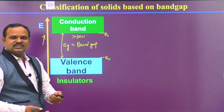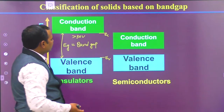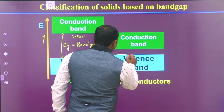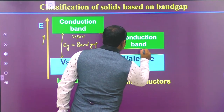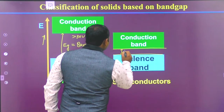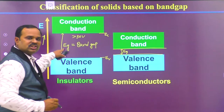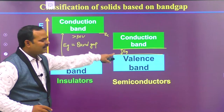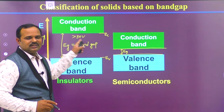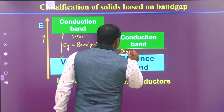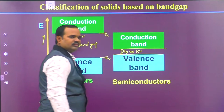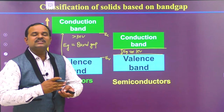For some materials, the band gap looks different — you can see here, this is the valence band top and this is the conduction band minimum. The band gap is very small compared to the insulators; there exists some band gap, but it is very small. If the band gap is of the order of 1 electron volt, then we can say they are semiconductors.